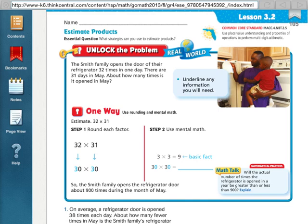So we know in order to find an estimate what we have to do is round our numbers. So they're giving us the problem 32 times 31. You can see here in step one they've rounded each of the factors. They rounded 32 to 30 and 31 to 30, so now they have 30 times 30.